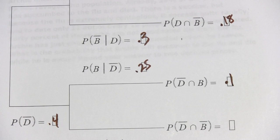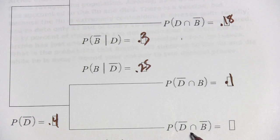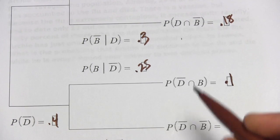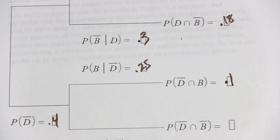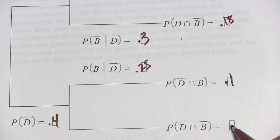The intersection of not attending the discussion sessions and not getting a B or higher is 0.4 times 0.75, which of course is 0.3.